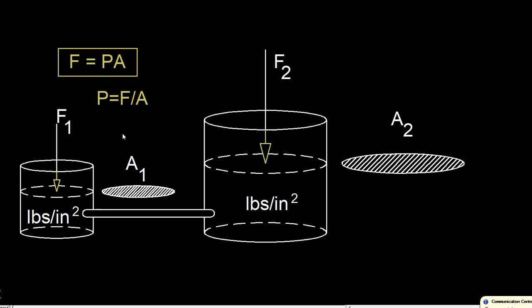Even if you've forgotten this, just remember the units of pressure — the US customary units are pounds per square inch, or PSI. That will give you this equation: you've got some unit of force over some cross-sectional area.